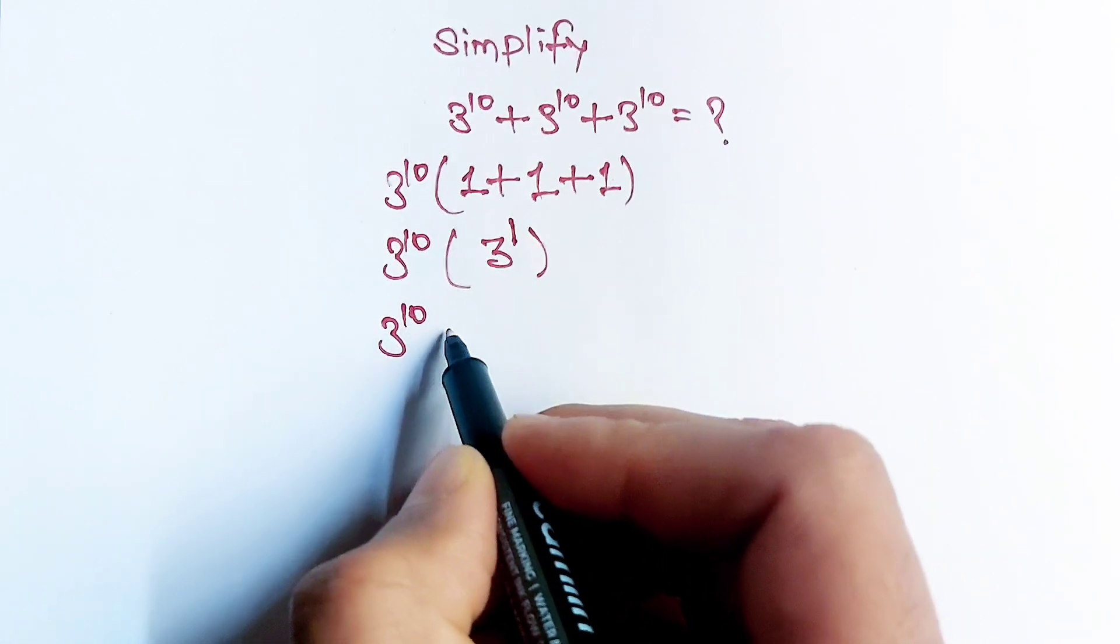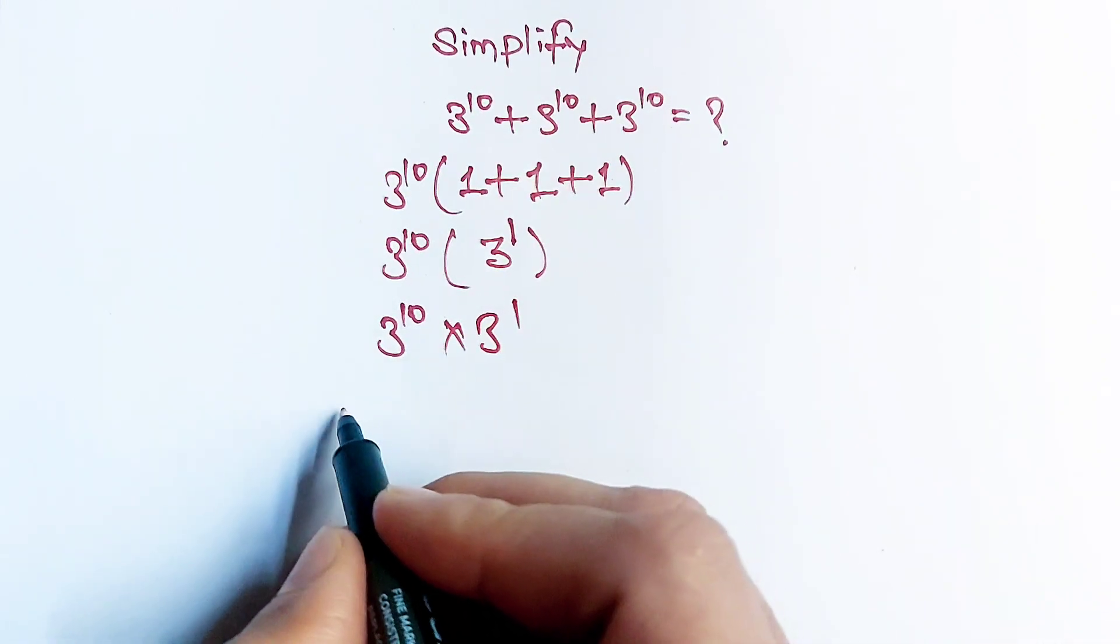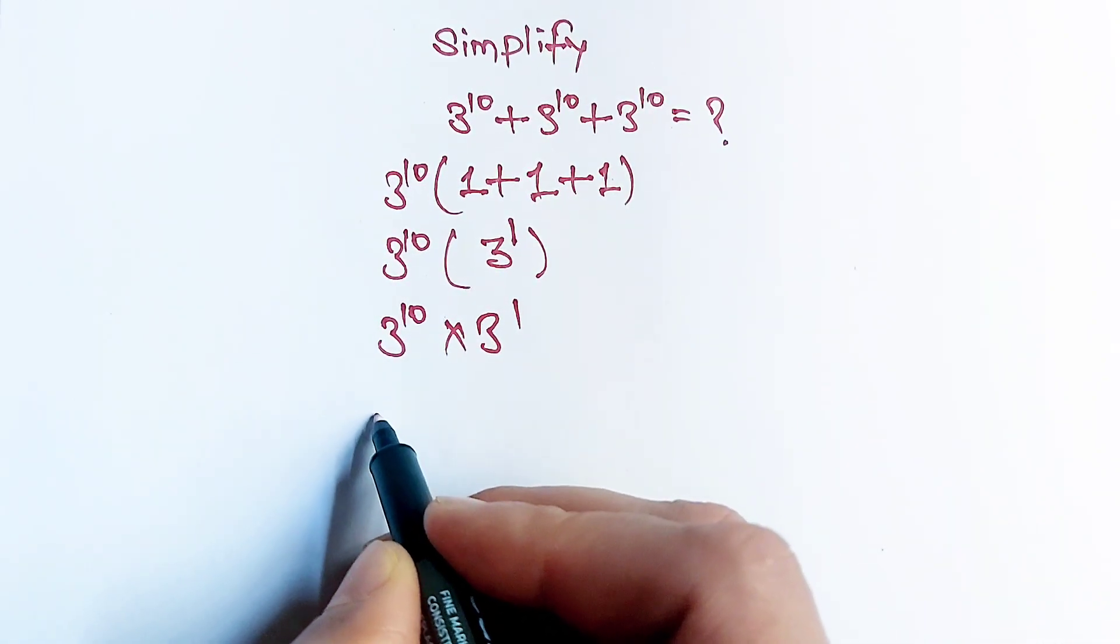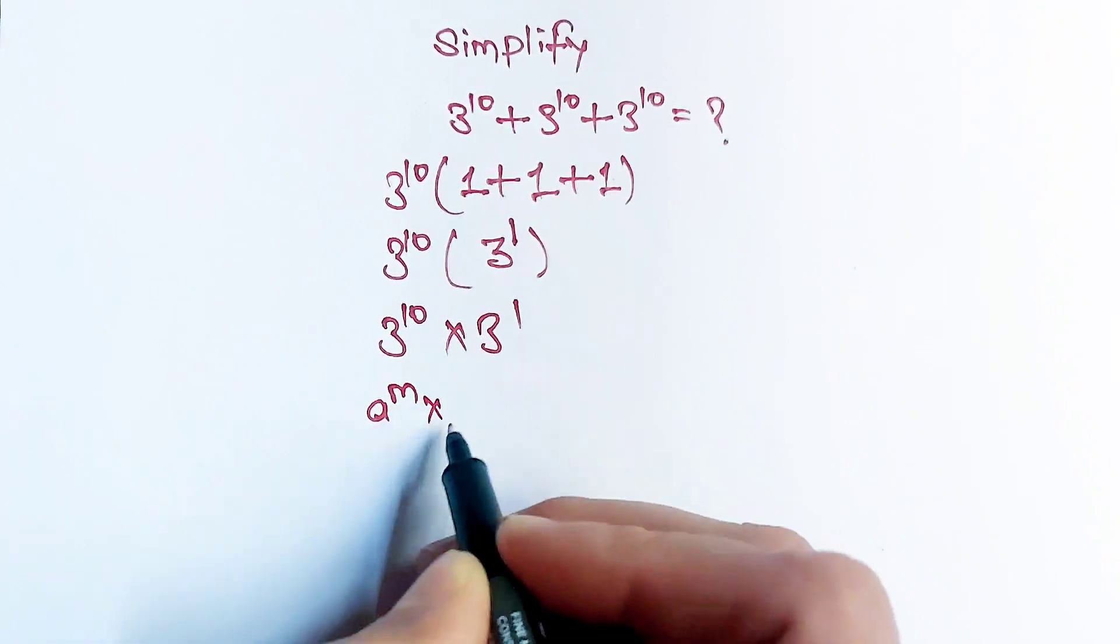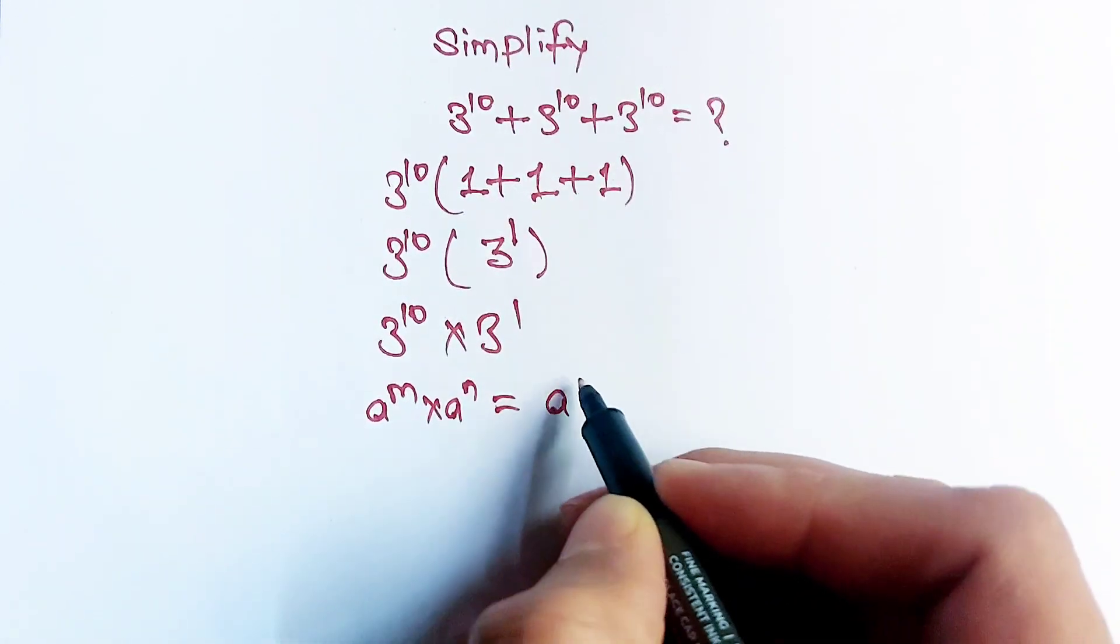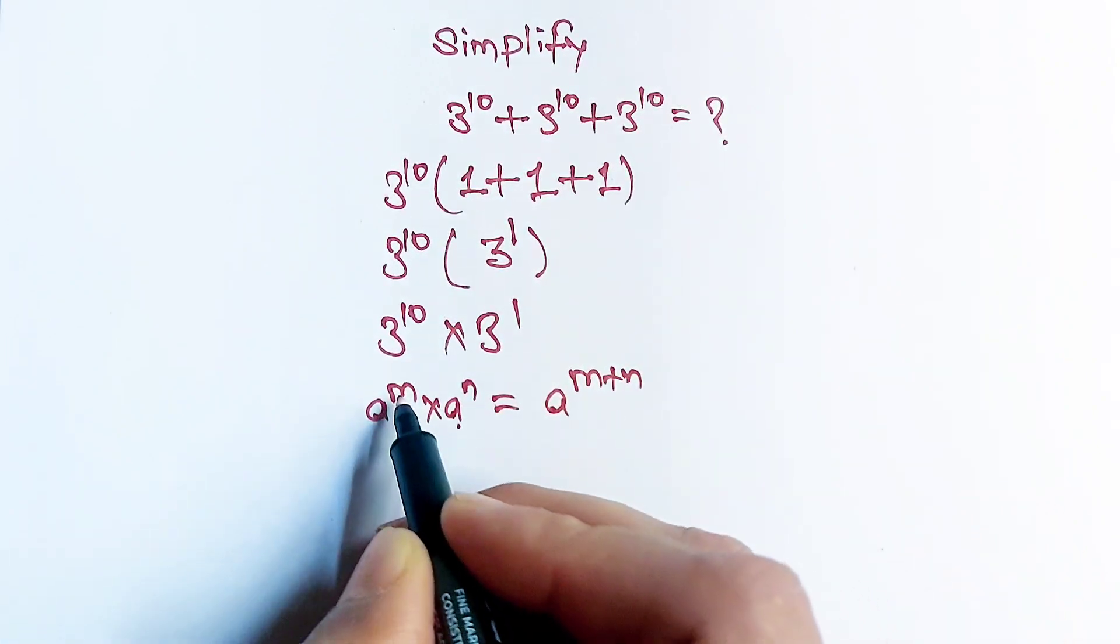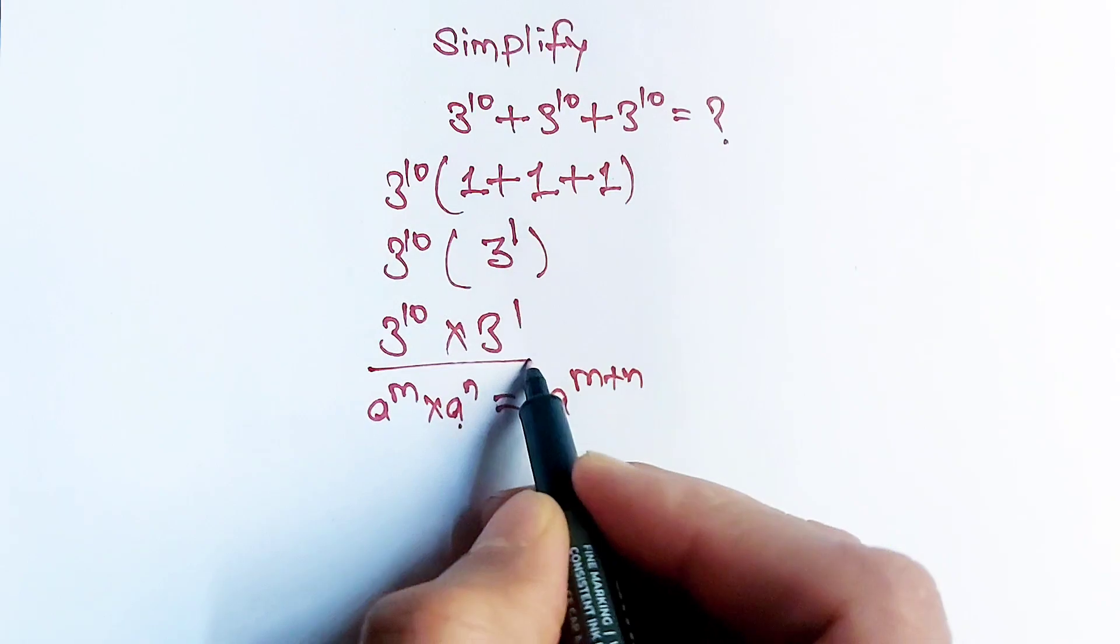So 3^10 times 3^1. Now keep this formula in your mind: a^m times a^n equals a^(m+n). When bases are the same, the powers will be added.